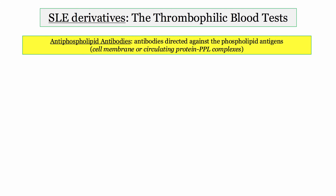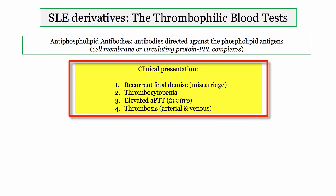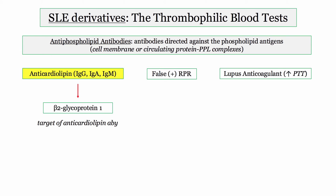The lupus-related thrombophilic blood tests involve antibodies directed against phospholipid antigens, including cell membranes and circulating phospholipid complexes. The clinical picture is completely characteristic: recurrent miscarriage, autoimmune thrombocytopenia, in vitro elevation of the activated partial thromboplastin time, and paradoxical thrombosis — either venous or arterial, which makes them relatively unique. You are expected to recognize this pathognomonic clinical description. The most important antibody is anticardiolipin, which is largely responsible for antiphospholipid antibody syndrome.